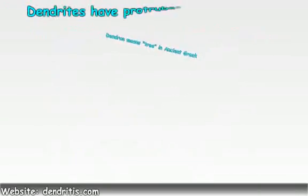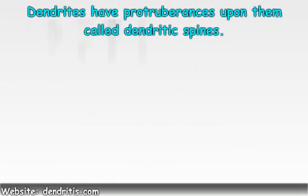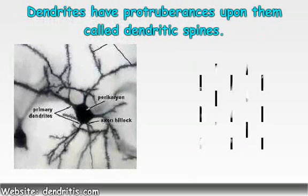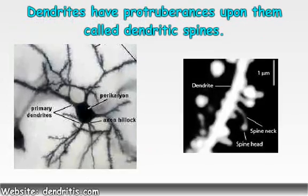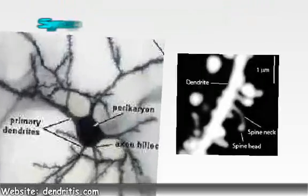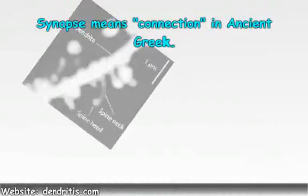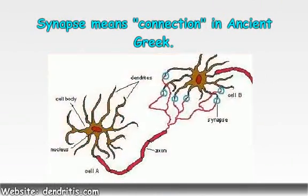There was no mention that the dendrites had protuberances upon them called dendritic spines, which are shown in greater detail on a photograph on the right. The dendritic spines have synapses, or connections, with other neurons on their surface. Synapse means connection in ancient Greek.